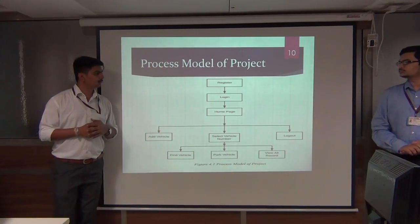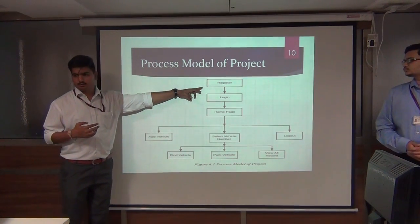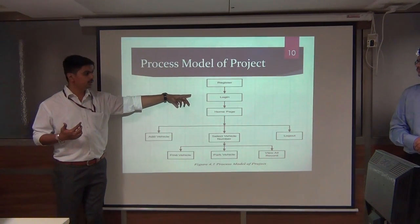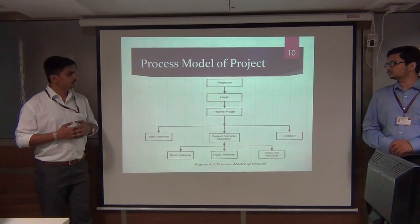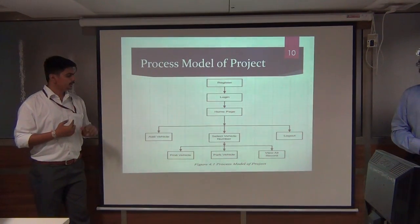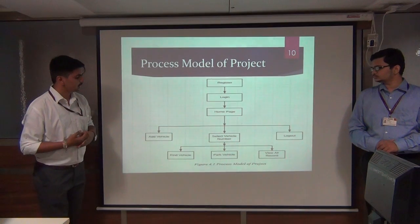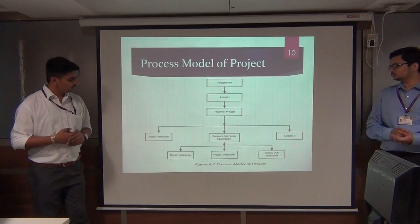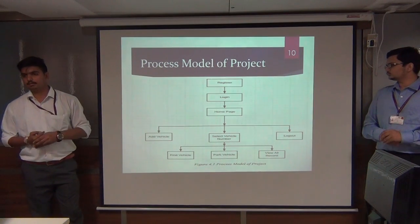This is the basic flow model of our project. As a new user, the user has to register first, and after registration the application redirects the user to the login page. After validation, it redirects to the main homepage, where three buttons are provided: Add Vehicle, Select Vehicle Number, and Log Out. Under Select Vehicle Number, three more buttons are available: Find Vehicle, Park Vehicle, and View Record of all parking history.